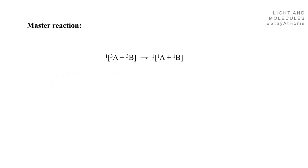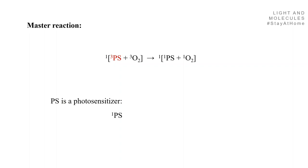This general reaction takes on the following real-life form: you have the photosensitizer in the triplet state reacting with ground state oxygen, which is a triplet, and yielding a singlet PS plus a singlet oxygen. PS is the photosensitizer, and as mentioned, it is obtained through photoexcitation and then inter-system crossing to the triplet state.